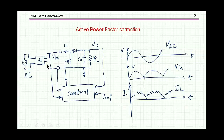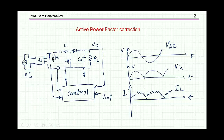In the classical approach, we'll be sensing the output in order to keep it constant, independent of load changes, sense the input voltage as a reference, and then the current of the inductor — which is actually reflected to the input as the control variable — that we are going to set to follow the sinusoidal waveform of the input.